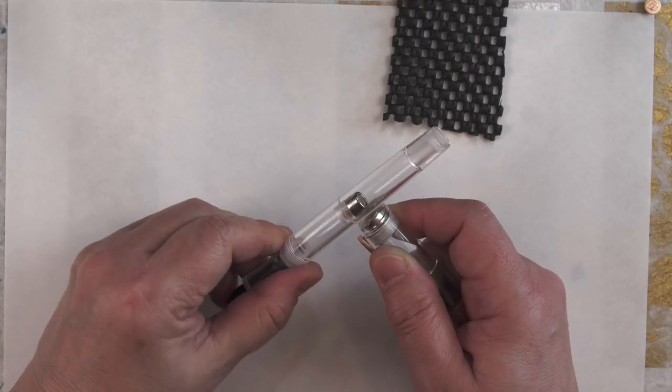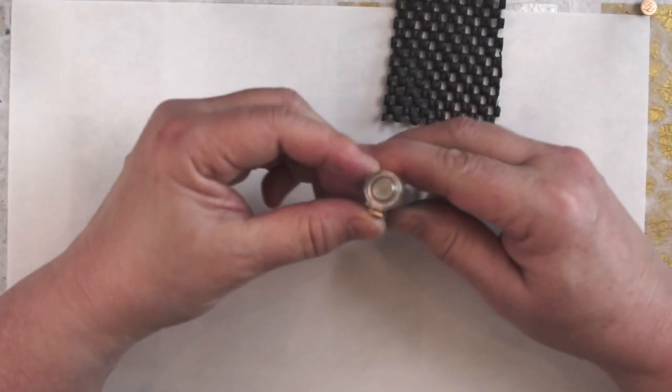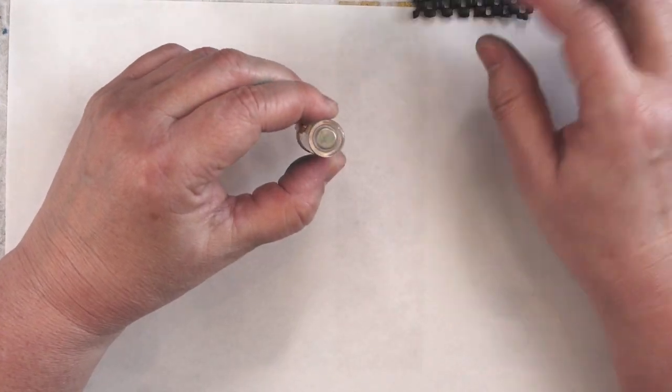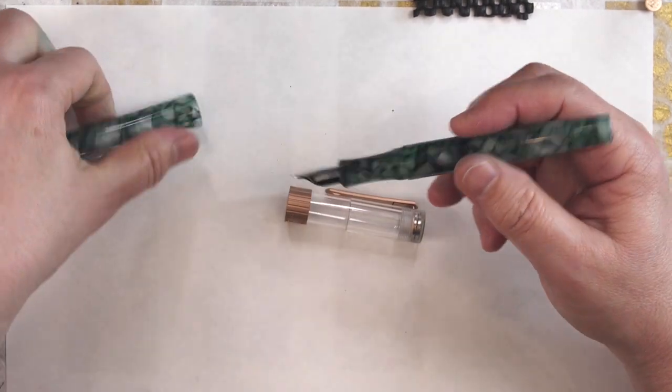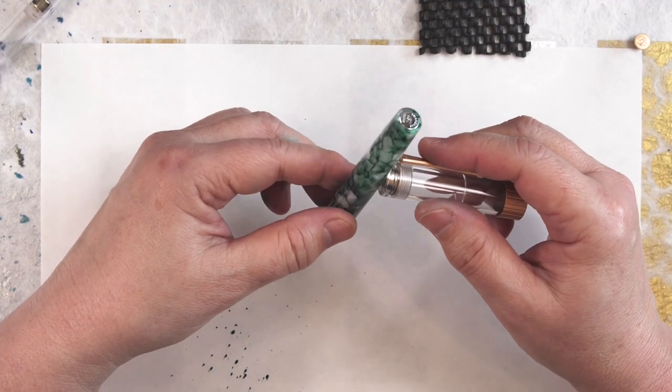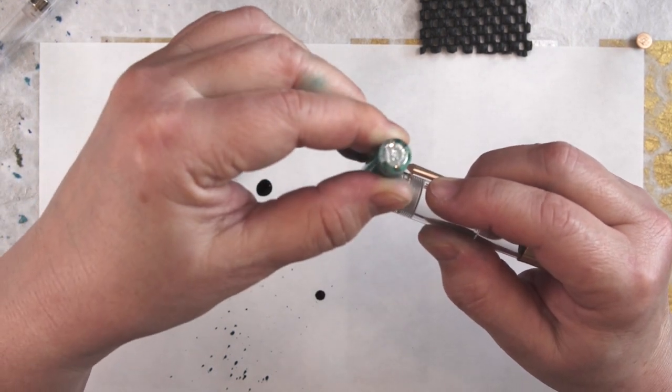But first I thought the problem with the 492 was maybe the magnet got old and weaker. But magnets don't become significantly weaker over a few months. And just to test it out, I used that magnet on my new pen.